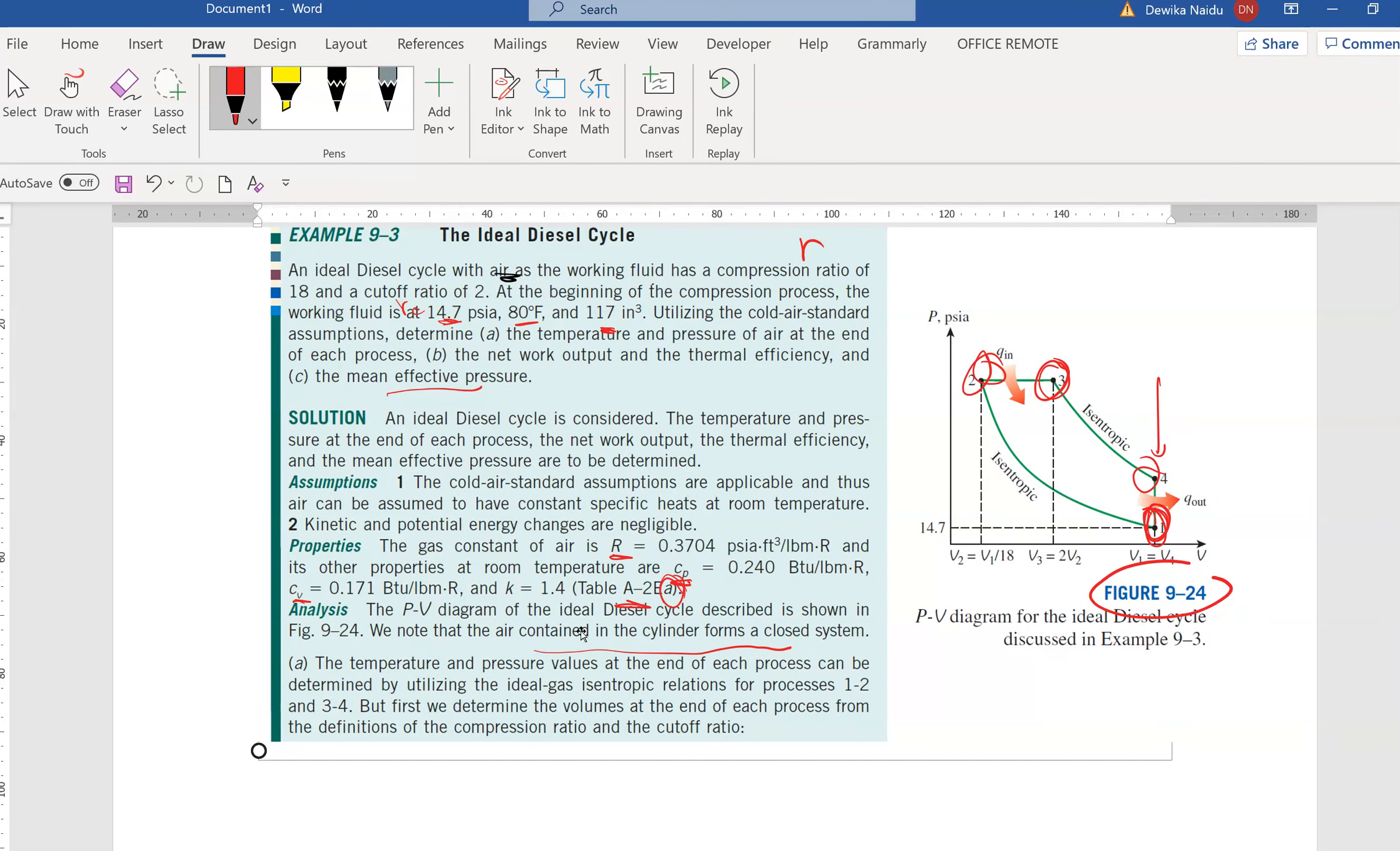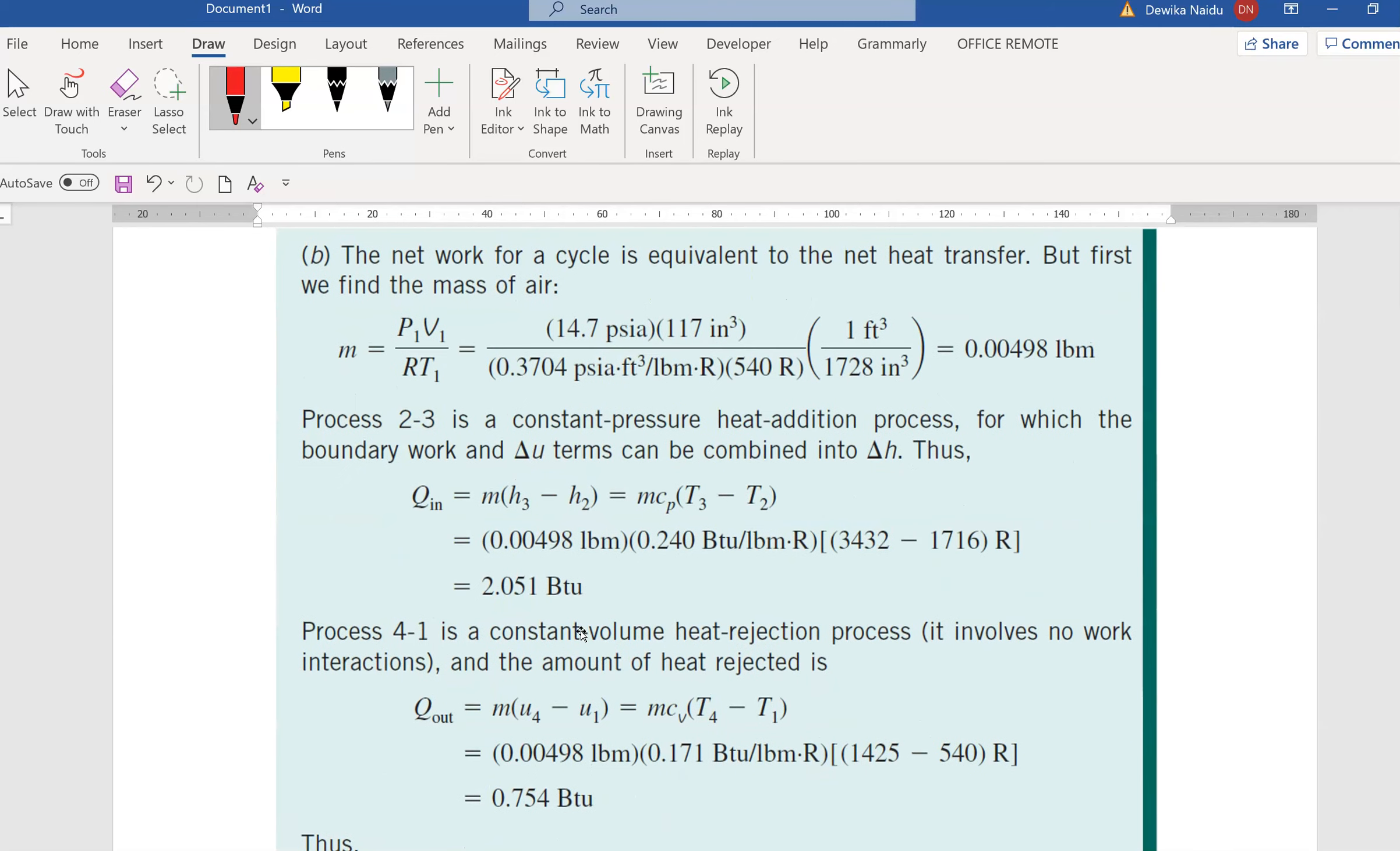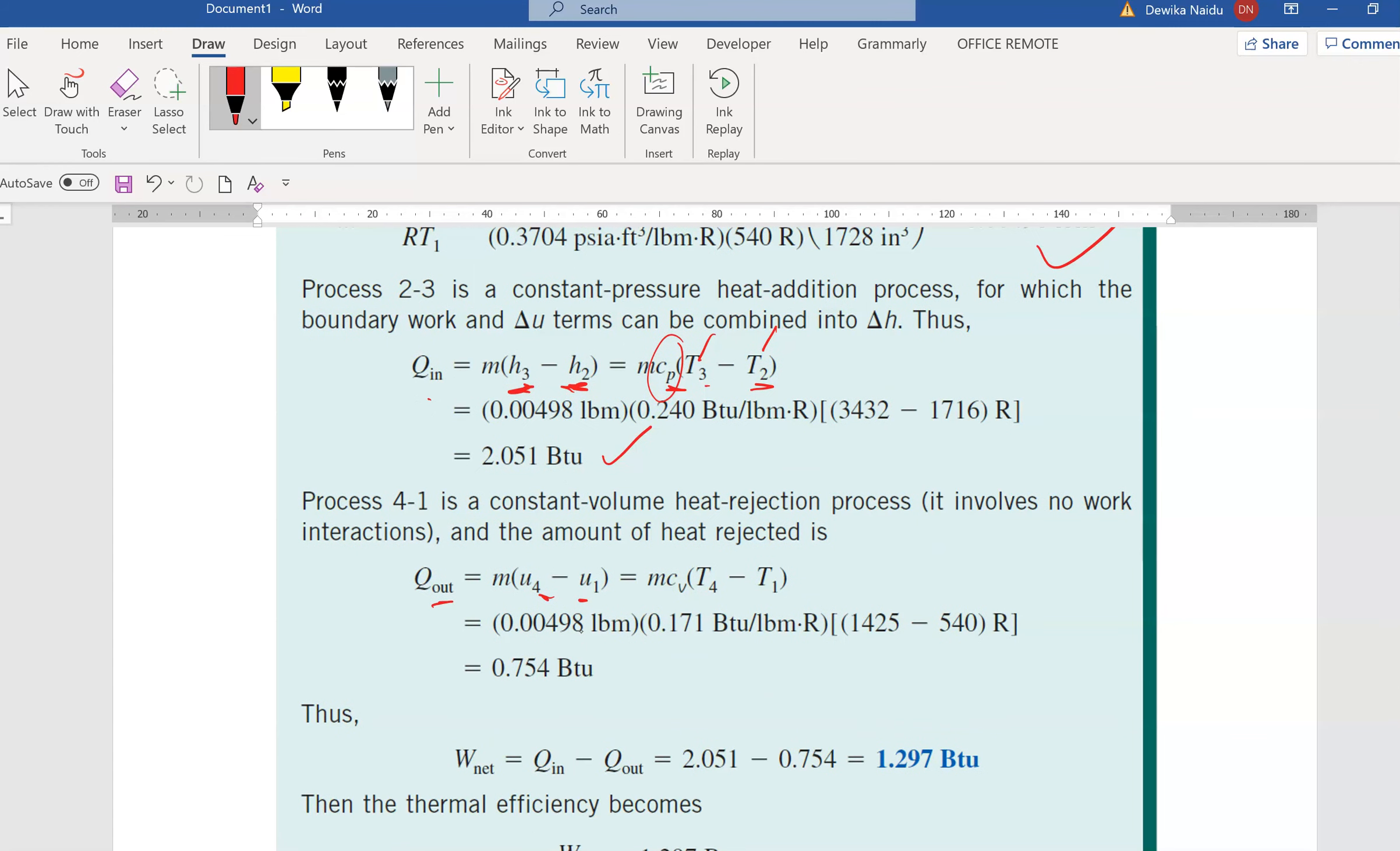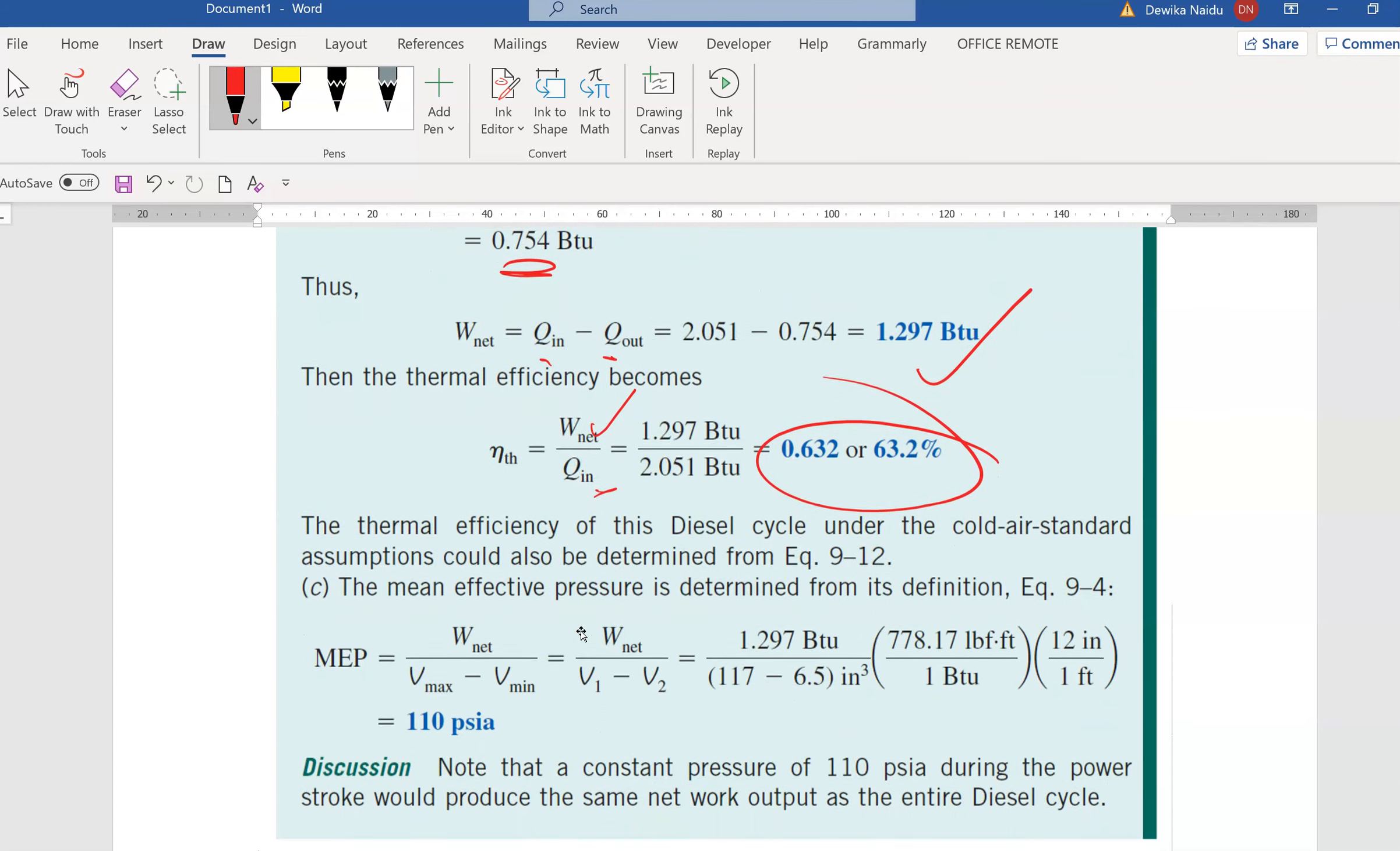Second part of the question is actually asking you for the network output and thermal efficiency. In this case, you need to find the mass first, because all the values is actually in specific form, you need to multiply them by mass. Q in is actually given by the change of H3 minus H2, or CP times T3 minus T2. You have T3, you have T2, CP you can get from the table. You just multiply, you get your Q in. Similar manner, Q out is actually using your U4, which is associated with Cv delta T. Plug in the information, you get your Q out. What is the work net? Q in minus Q out. You get your work net. What is the efficiency? W net divided by Q in. You get the efficiency of the engine.